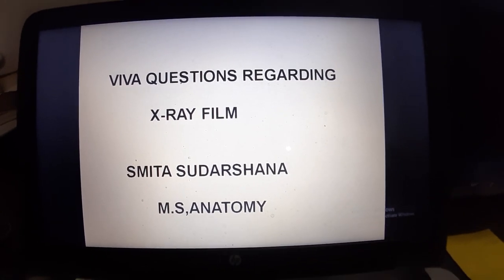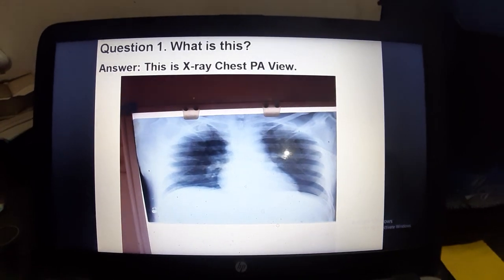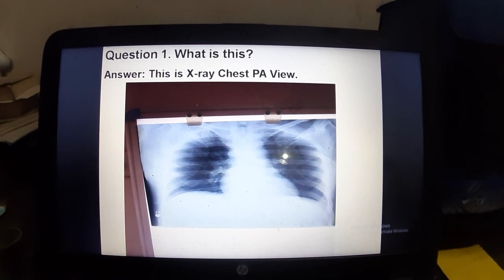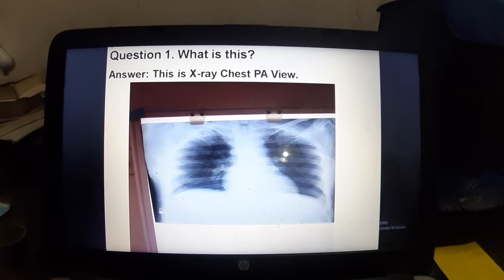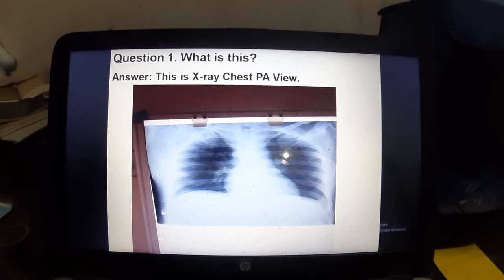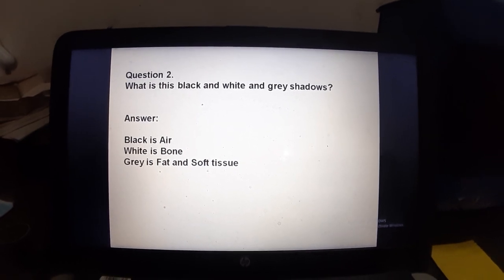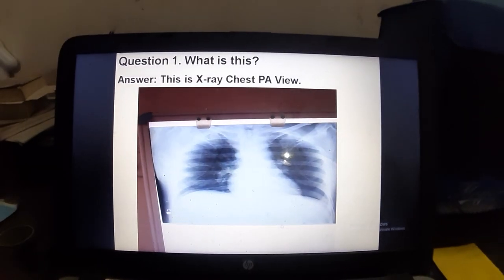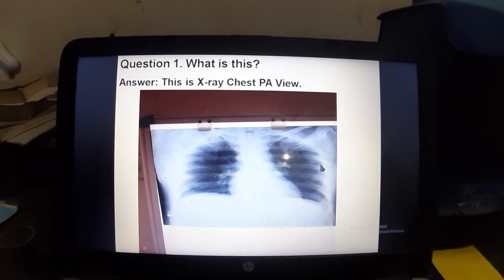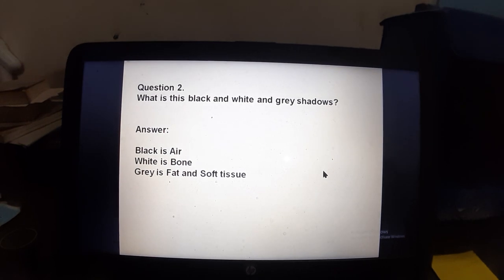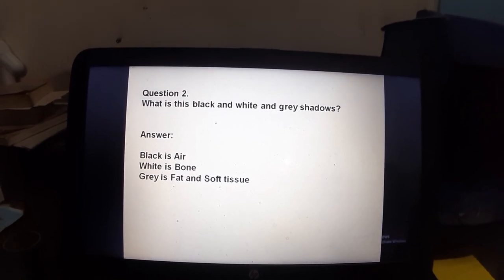Today I am going to tell you the 'why' questions regarding X-ray film that the examiner will ask you. By showing the X-ray chest, they will ask: what is this? This is X-ray chest PA view. They will ask what are the black and white shadows. Black is air, white is bone, and gray is fat and soft tissue.